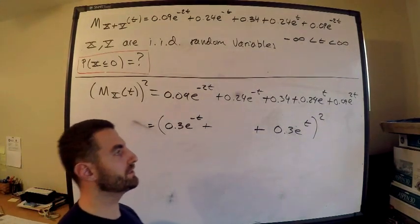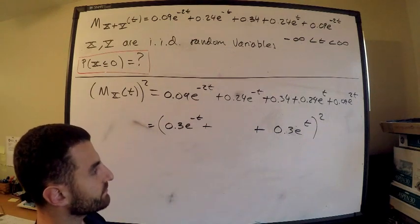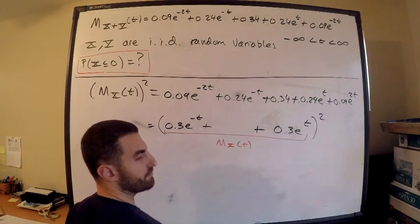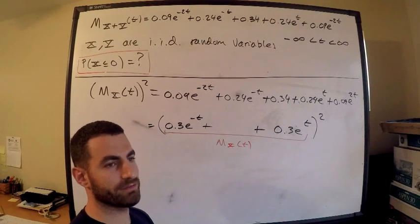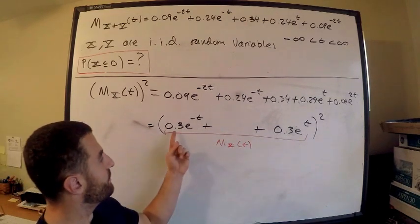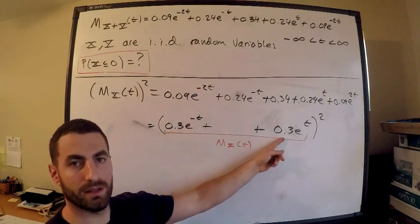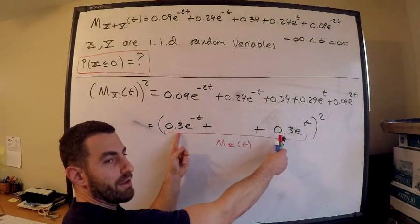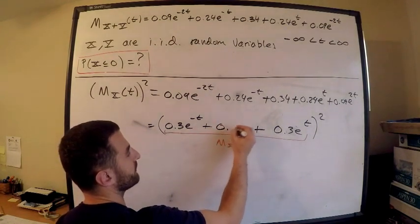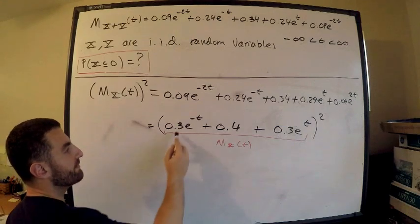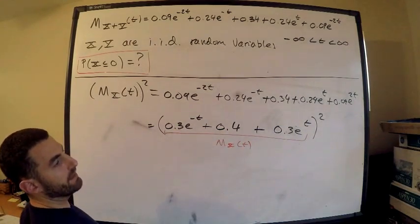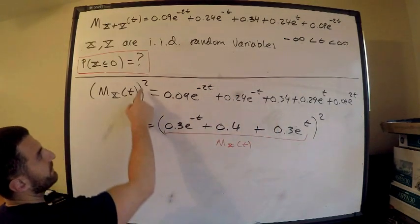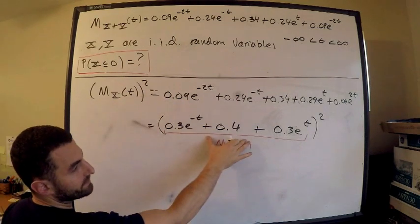Here's an easy way to find the middle coefficient. Since this expression inside the square root is the moment generating function for X — a discrete random variable — its coefficients must be probabilities that sum to 1. We already have 0.3 and 0.3, which sum to 0.6. Therefore the middle coefficient must be 0.4. If you multiply out (0.3e^{-t} + 0.4 + 0.3e^t)^2, you recover the original expression.